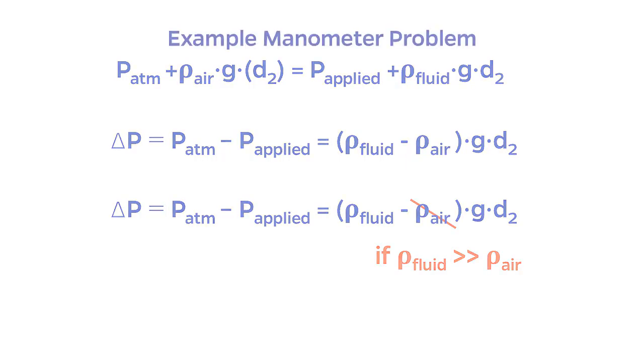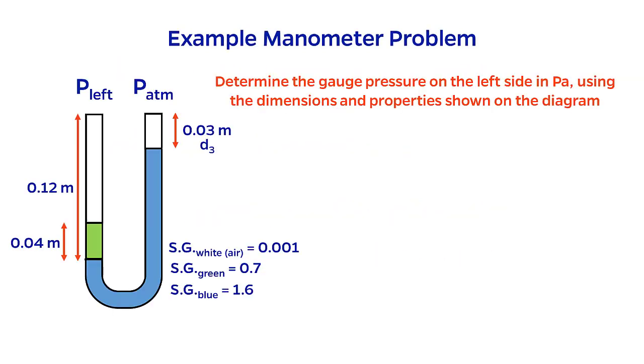Let's try a short example problem, which will hopefully clarify this. Let's say we wanted to determine the gauge pressure on the left side of this manometer in pascals, using dimensions and properties as shown on this diagram. It looks like we have two fluids to deal with which are immiscible, a blue fluid and a green fluid.